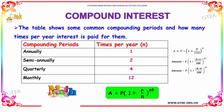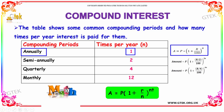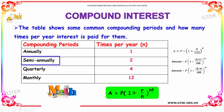Here, the table shows some common compounding periods and how many times per year the interest is to be paid for them. If the compounding period is annually, the interest has to be paid one time per year, and the formula is A = P into (1 + r/100) whole power n. If the compounding period is semi-annual, we need to pay two times of interest per year, and the formula is A = P into (1 + r/2/100) whole power 2n.